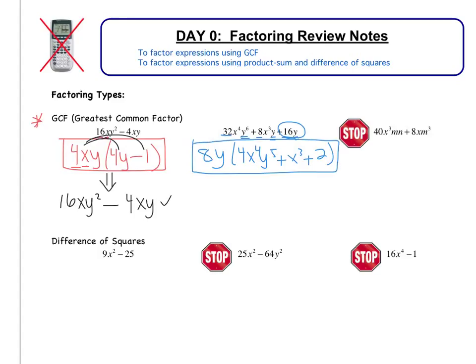So this is your final answer. Again, if you multiply back out, you should be left with your original. So let's do that. We get 32x to the 4th, y to the 6th, plus 8x to the 3rd, y, plus 16y, which is exactly what we started with.